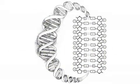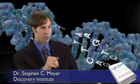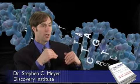According to the sequence hypothesis, the chemicals along the spine of the DNA molecule — called bases, represented by the letters A, T, G, and C — function just like alphabetic letters in a written text or like digital characters in a machine code. Depending on how they're arranged and sequenced, these chemicals convey instructions for building the proteins and protein machines that the cell needs to stay alive.